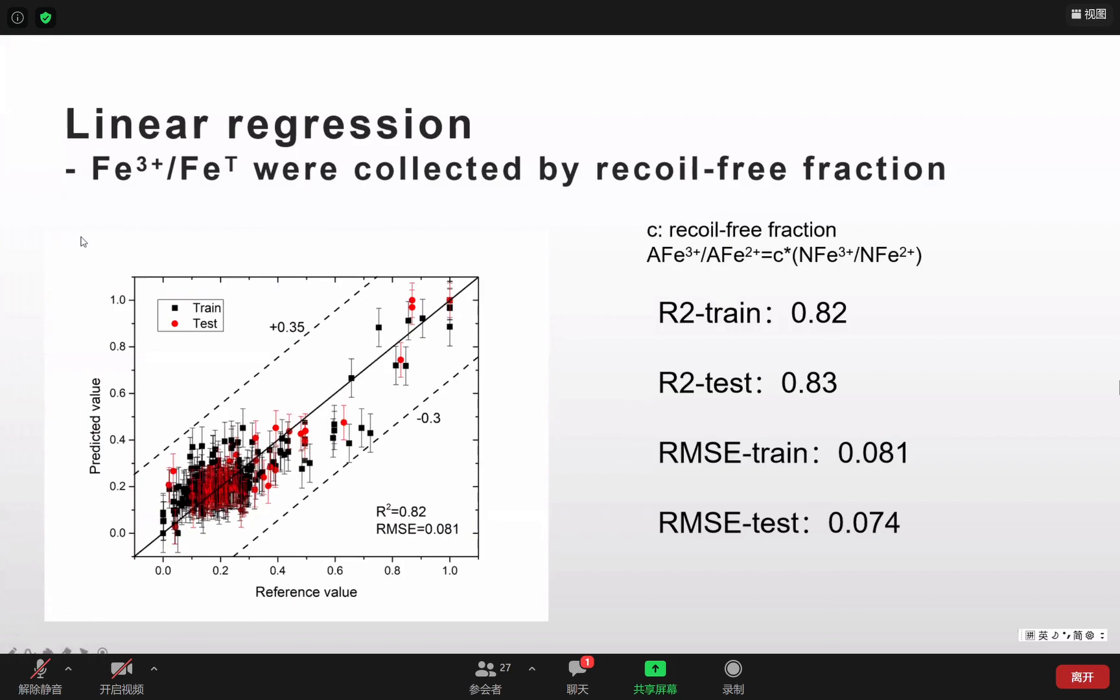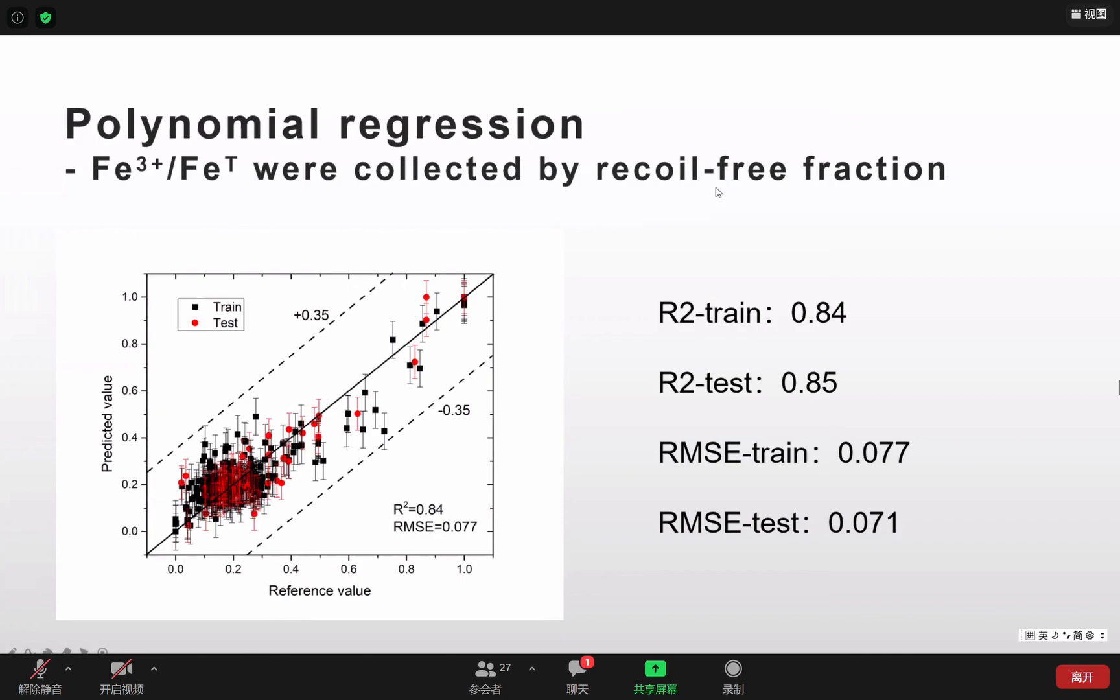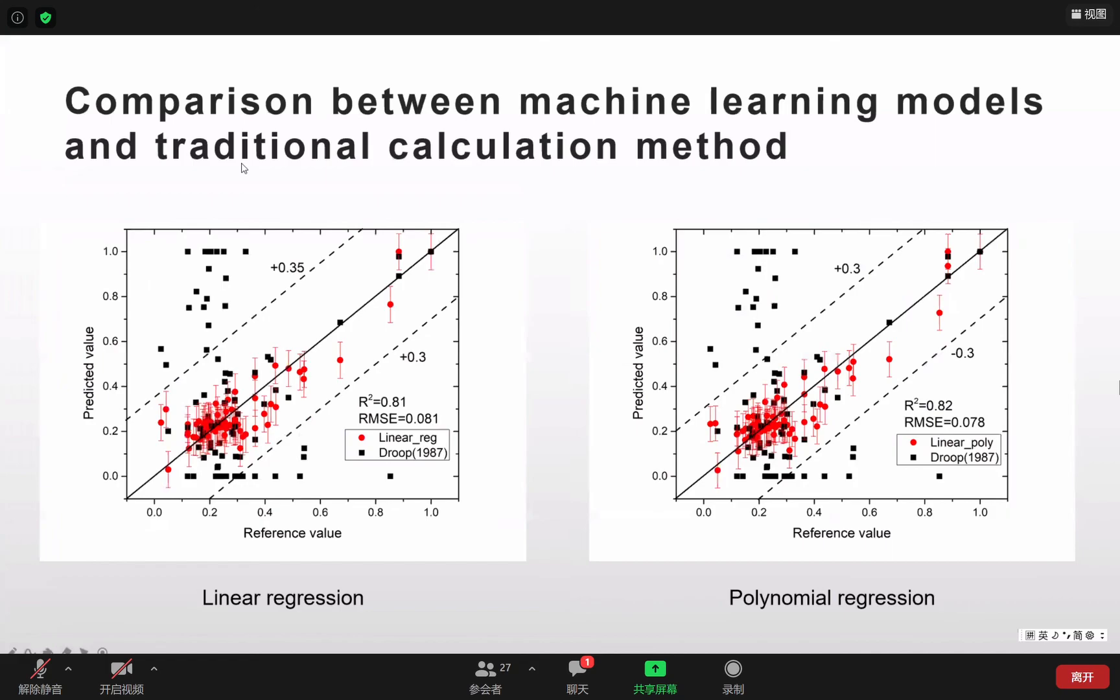Also, we use the polynomial regression and it shows a better result. Then we compare and this is the comparison between the machine learning models and the traditional calculation methods. We can find that the machine learning models show a better result than the traditional calculation methods. We also find that the traditional calculation method cannot give accurate and reliable results.